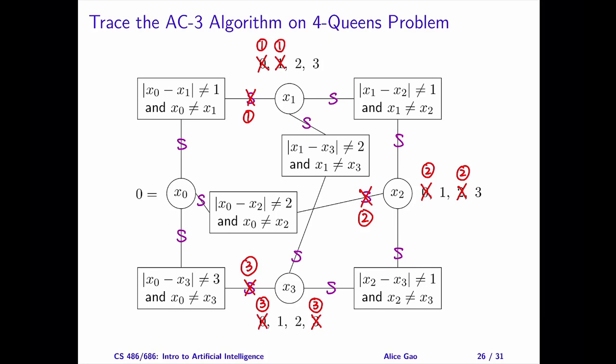Since we reduce the domain of x3, do we need to add any arcs back to the set S? There are three candidates: the arc between x0 and x3, the arc between x1 and x3, and the arc between x2 and x3. Due to the edge case, we do not add back the arc between x0 and x3, where x0 is the primary variable. We should add the other two arcs back to S. Since they are already in S, we do not need to add them again.